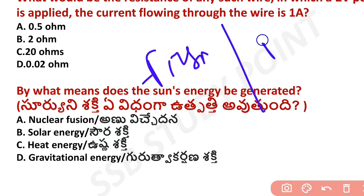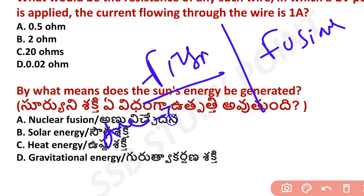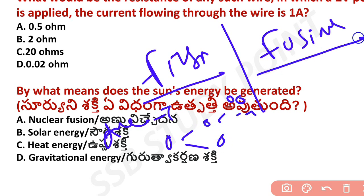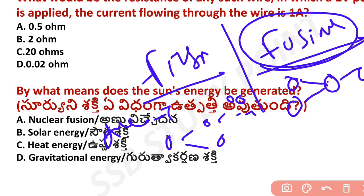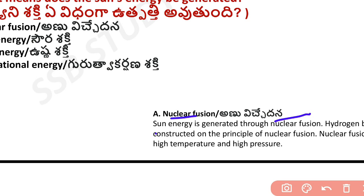The difference between fission and fusion: in fission, nuclear energy is produced when one atom is split into two or more atoms. In fusion, two atoms combine to produce energy. Fission reaction can be controlled using moderators and is used in nuclear reactors. Sun's energy is generated through nuclear fusion.